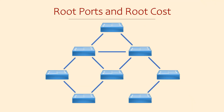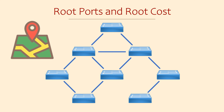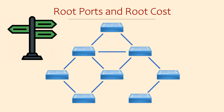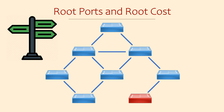Using the information learned from BPDUs, a switch will build something like a map of the network — not exactly a full map, more like signposts pointing the way to the root bridge. Spanning tree is all about finding the best path to the root bridge. Think about the switch that we just turned on, which received a superior BPDU on a particular port, so it knows that this port points the way through to the root bridge. It names this port the root port.